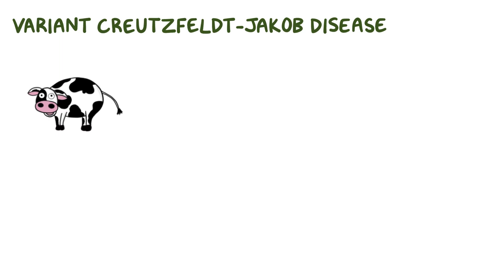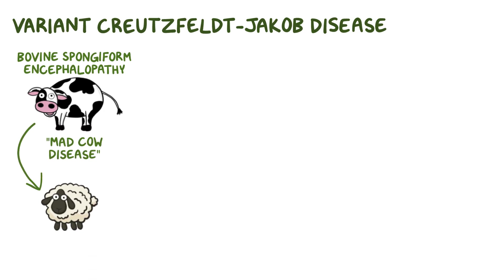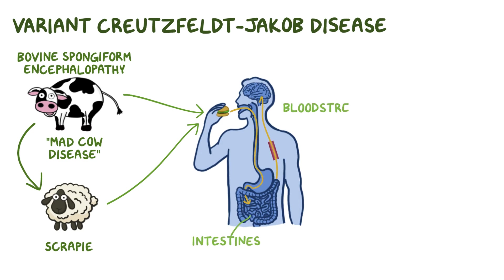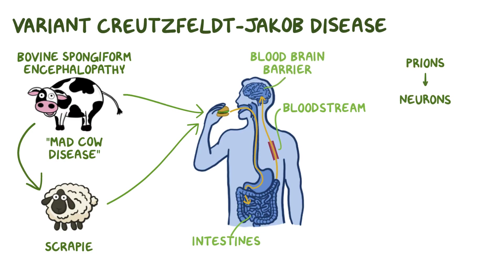Variant Creutzfeldt-Jakob disease is caused by eating the meat of cows with prions in the muscle tissue. In cows, these prions cause bovine spongiform encephalopathy, more commonly called mad cow disease. When sheep are fed cow meat, the prion causes the disease scrapie. If a person eats the meat of affected cows or sheep, the prions get absorbed through the intestines into the bloodstream. It's thought that the protein can somehow get through the blood-brain barrier and then enter the neurons by a process called adsorptive endocytosis, where the plasma membrane of nerve cells folds inward to bring in substances that would otherwise not be able to cross the plasma membrane by themselves.